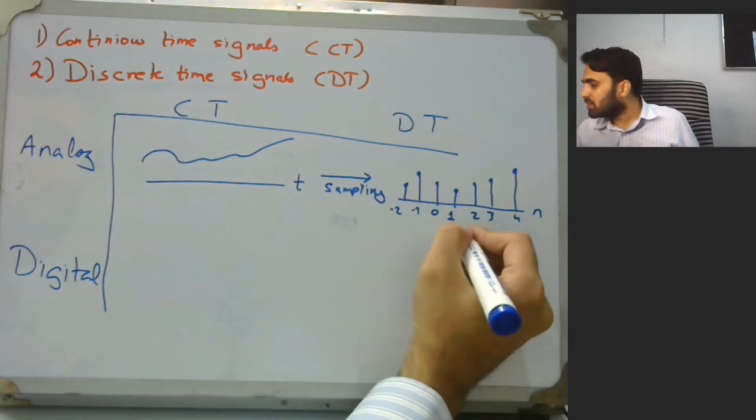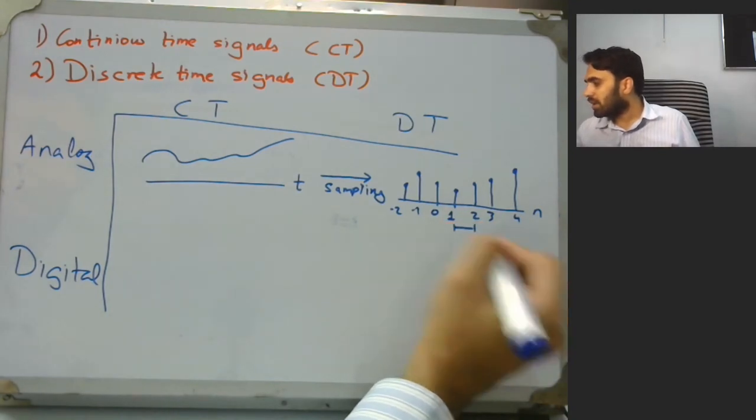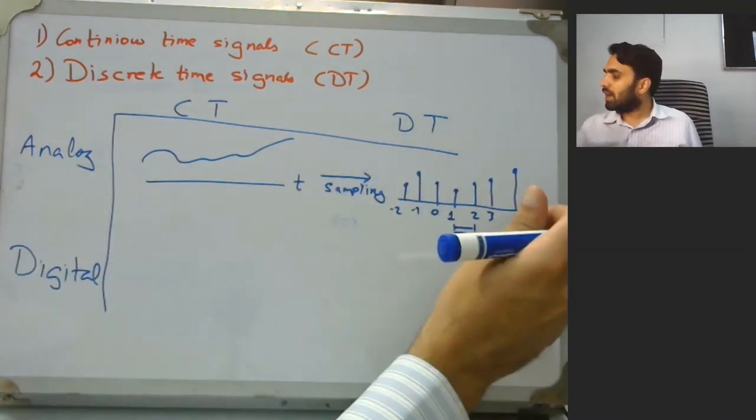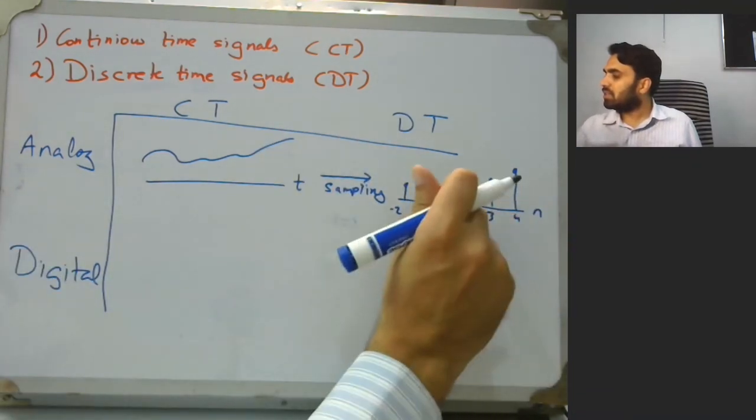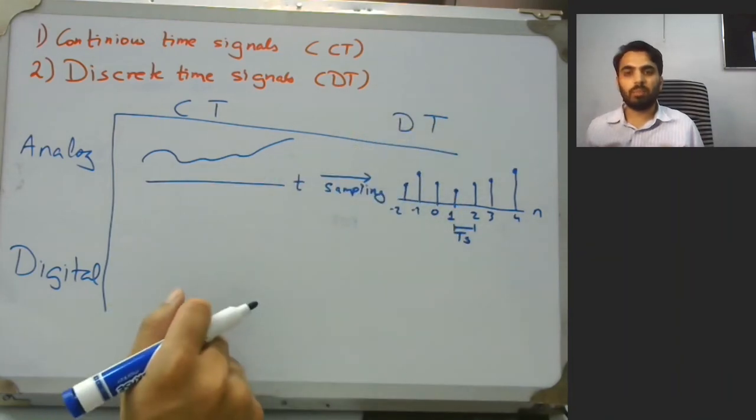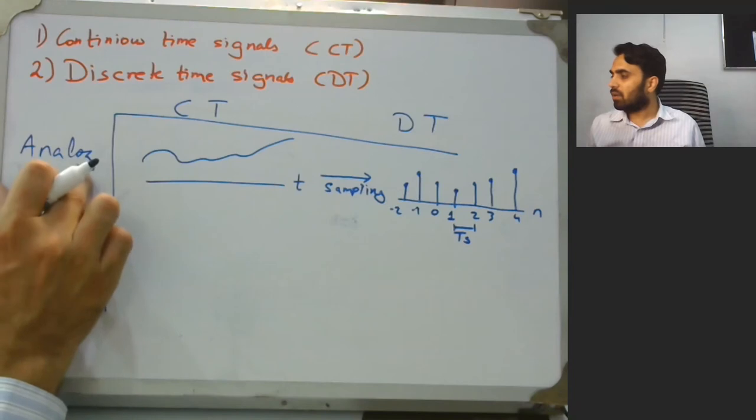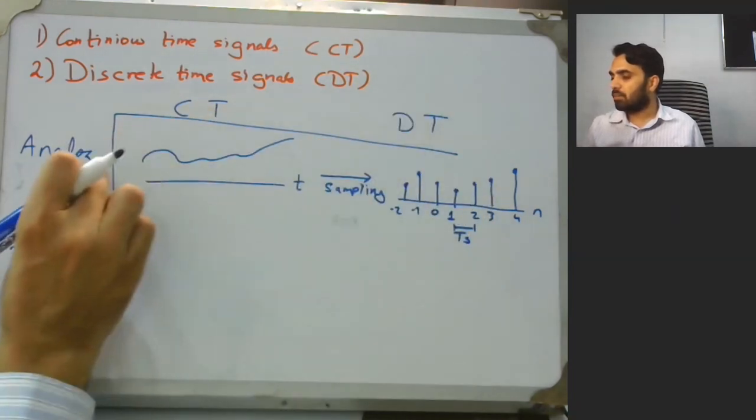At the same time, the distance between these can be referred as the time Ts. An integer multiple of Ts is giving us a specific value in time frame. This is our continuous time analog and then this is our discrete time analog signal.